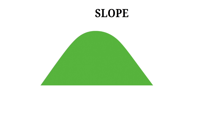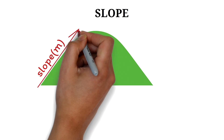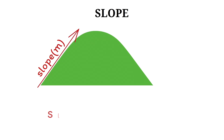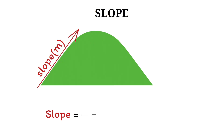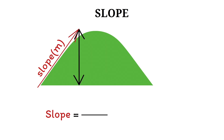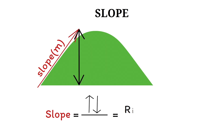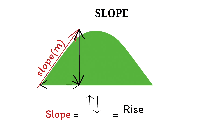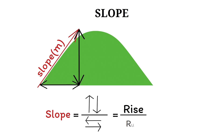To understand slope, let's take a closer look at the hill. The slope of the hill, denoted by the letter m, is a measure of the steepness and direction of this line. It is defined as the ratio of the vertical change — that's how much you move up or down, the rise — to the horizontal change, that is how much you move across, the run, between two points on a line.